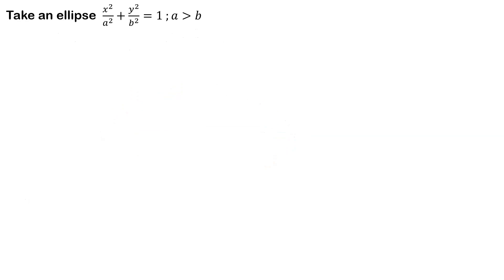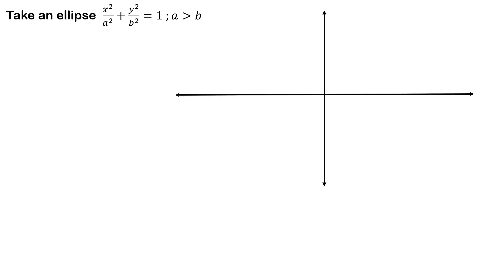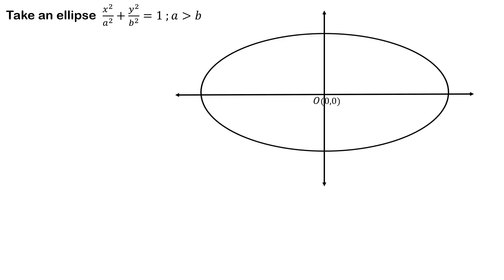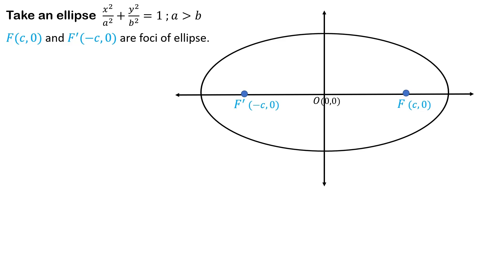We take the ellipse x squared over a squared plus y squared over b squared equals 1, where a is greater than b — that is, a is the semi-major axis and b is the semi-minor axis. Let's draw the ellipse. O at (0,0) is the center of the ellipse. F and F' are the foci at (c, 0) and (-c, 0) respectively.